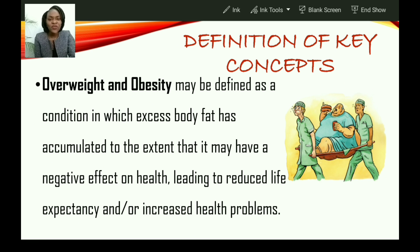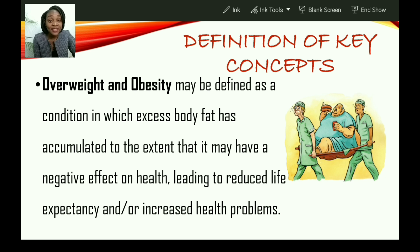What is overweight and obesity? This may be defined as a condition in which excess fat has accumulated to the extent that it may have a negative effect on health, leading to reduced life expectancy and/or increased health problems. In other words, overweight and obesity refers to the condition where we have excess body fat that negatively affects one's health, leading to reduced life expectancy — some persons may die earlier than expected, or they may battle with chronic diseases, all because they are obese.